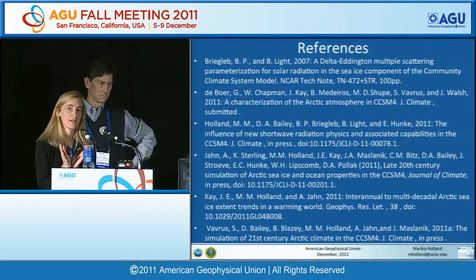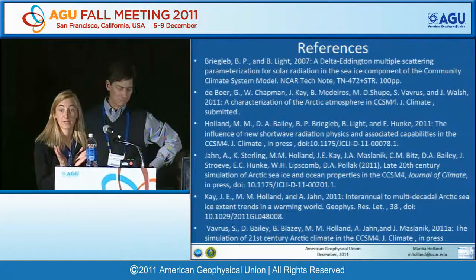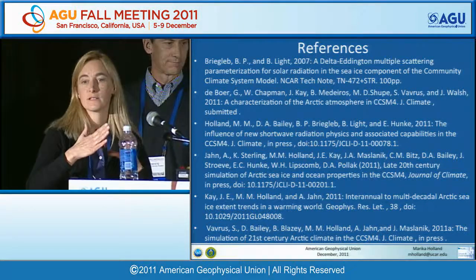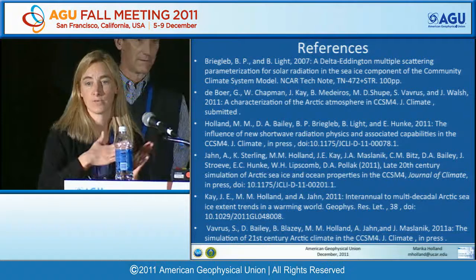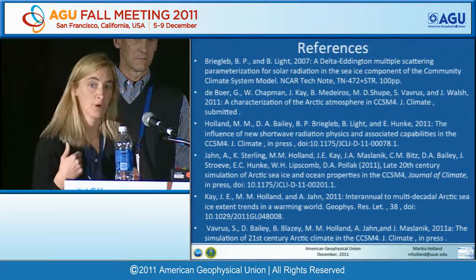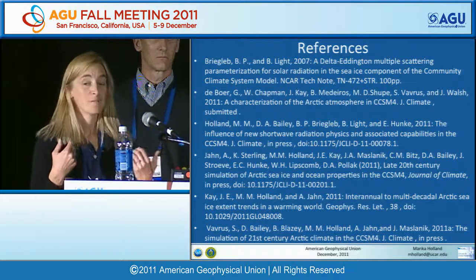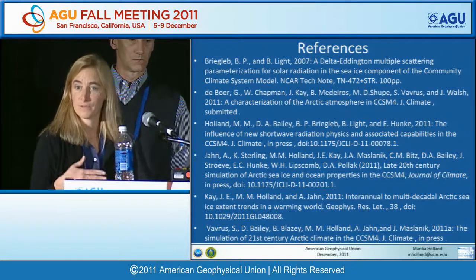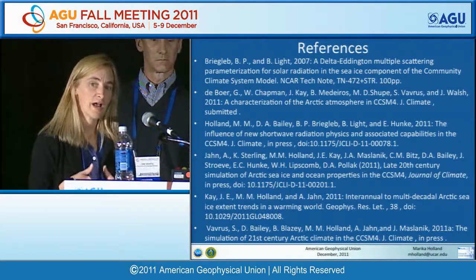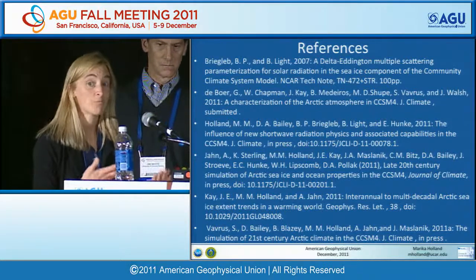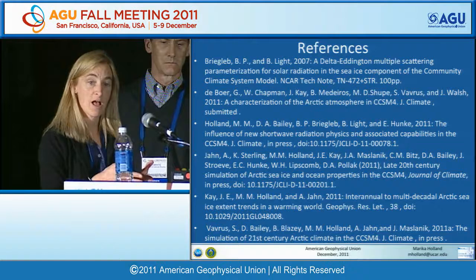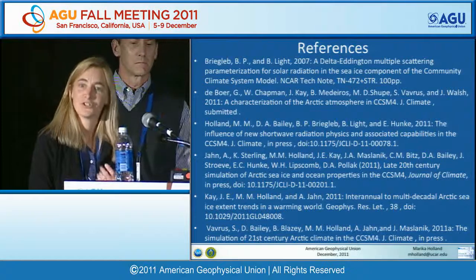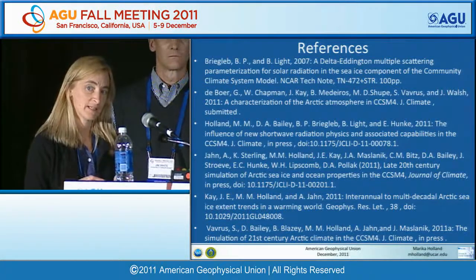We do see very large inter-decadal variability in this model. On the 30-year time scale, one of our ensemble members has a larger ice loss trend than observed, while the other five have lower ice loss, but natural variability could be playing a very dominant role in observed ice loss. I think it argues that we really need more than six ensemble members to compare to the observed record, and we're trying to do more ensemble members to further investigate those effects.